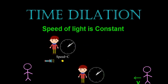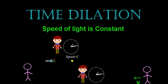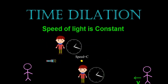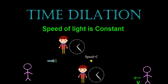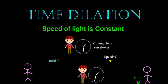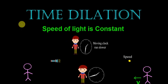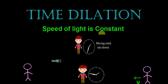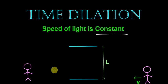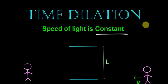In the previous video, by doing some thought experiments, we understood the reason for relativity. The main reason for relativity is that the speed of light should be constant for different inertial frames. In this video, just by keeping this speed of light constant, we will derive time dilation.